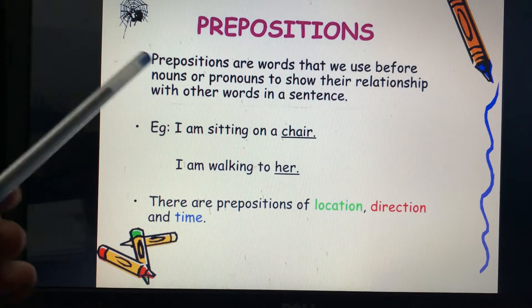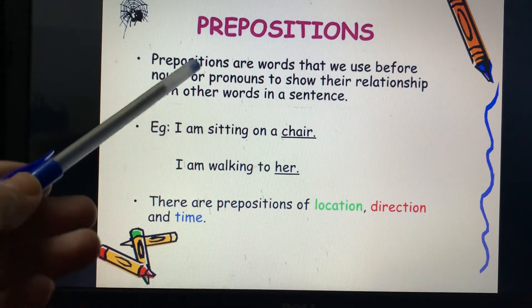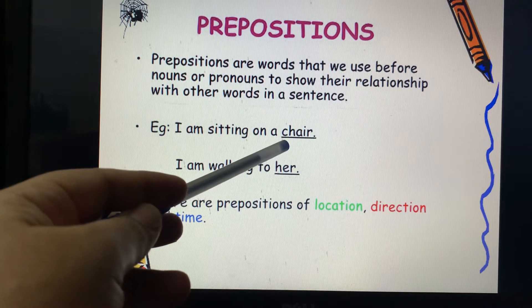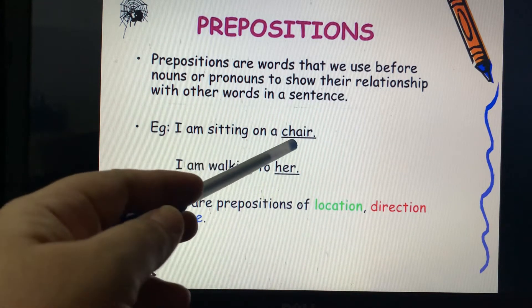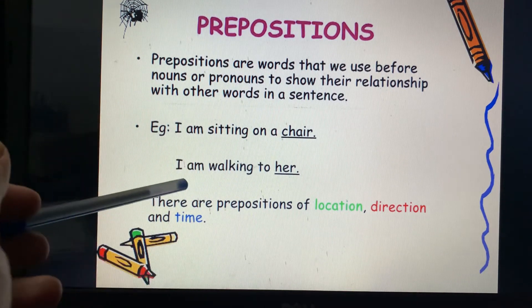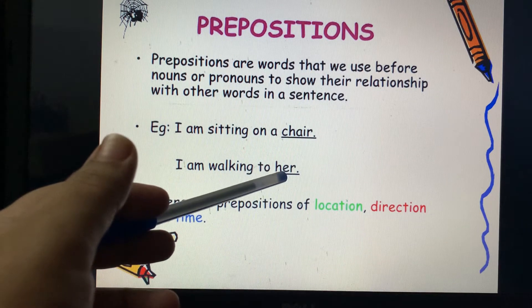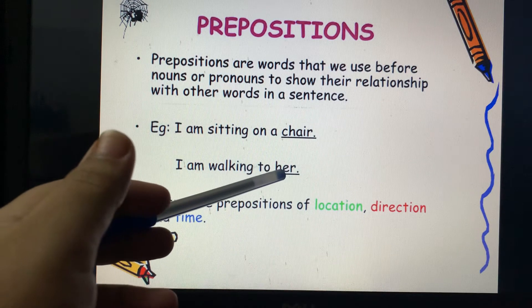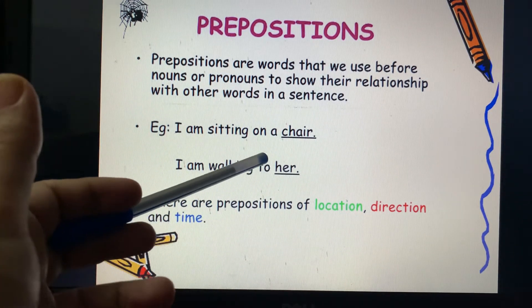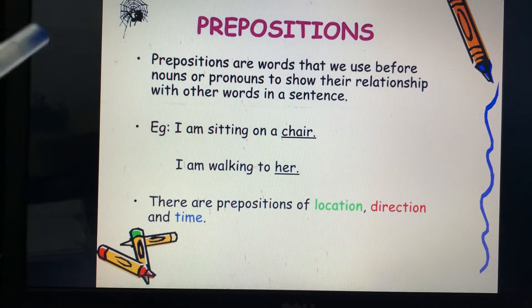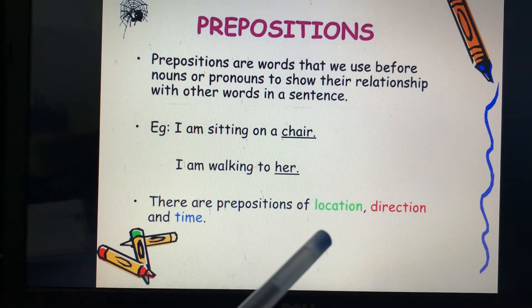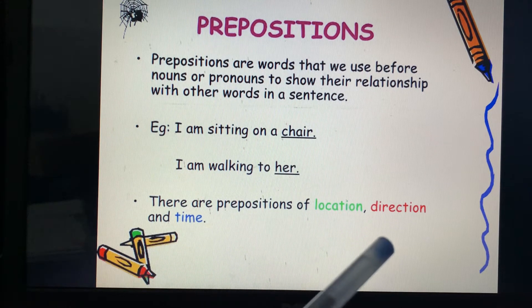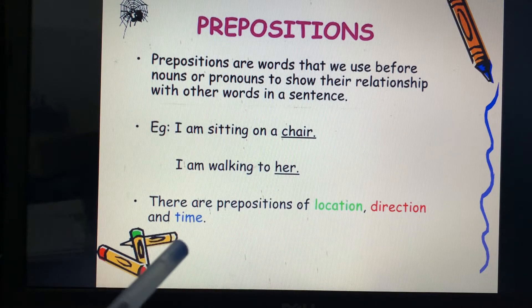Let us take an example. 'I am sitting on a chair.' Over here, chair is a noun. Before it, we are using the preposition 'on' — on is the position of the chair. Another example: 'I am walking to her.' 'Her' is a pronoun, and before the pronoun we are using the preposition 'to.' So it is basically the position of something. We are going to study prepositions of location, direction, and time.